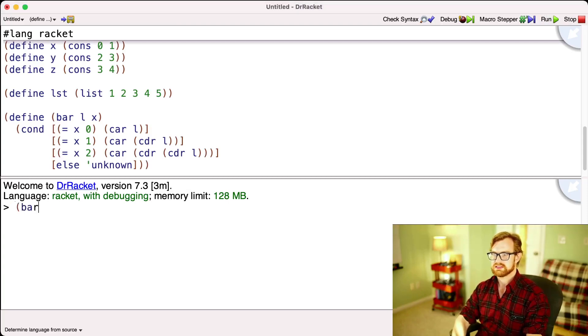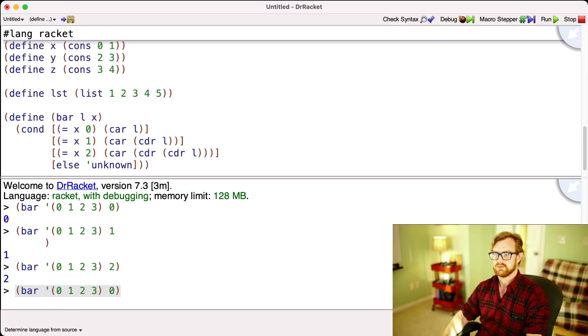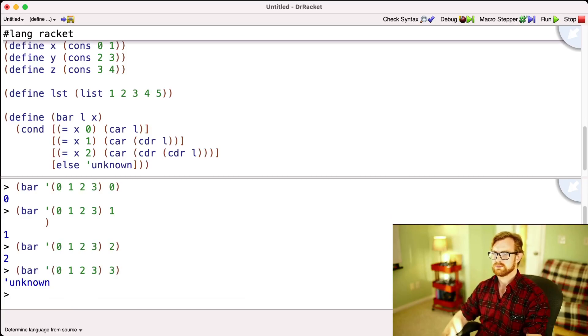Alright, so let's test it out. 0, 1, 2, 3, element 0. Let's get element 1, and then element 2, and then element 3. Alright, so that's our introduction to lists.